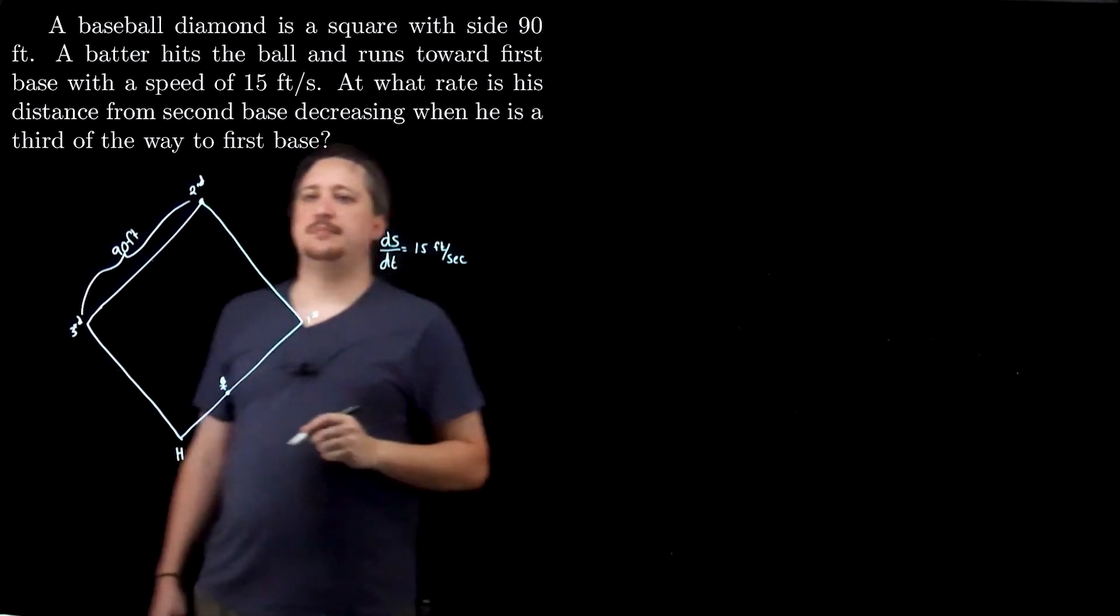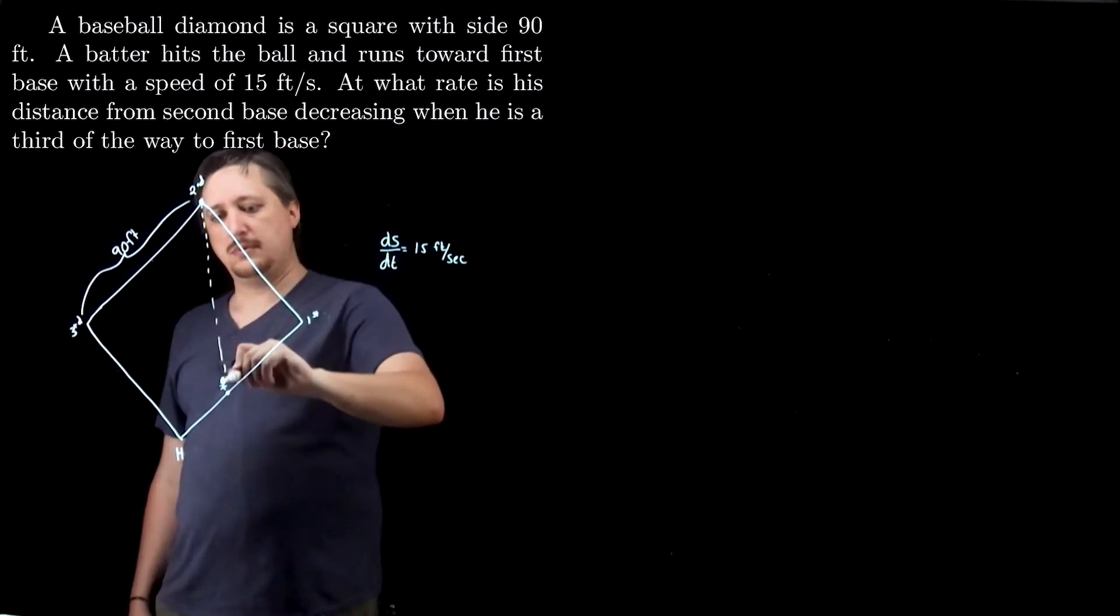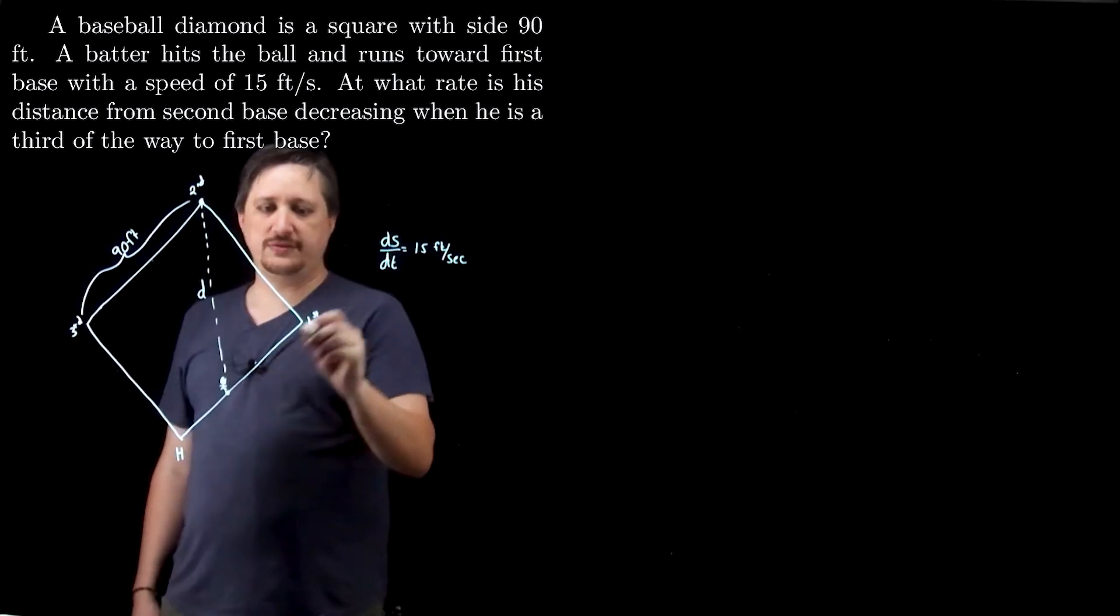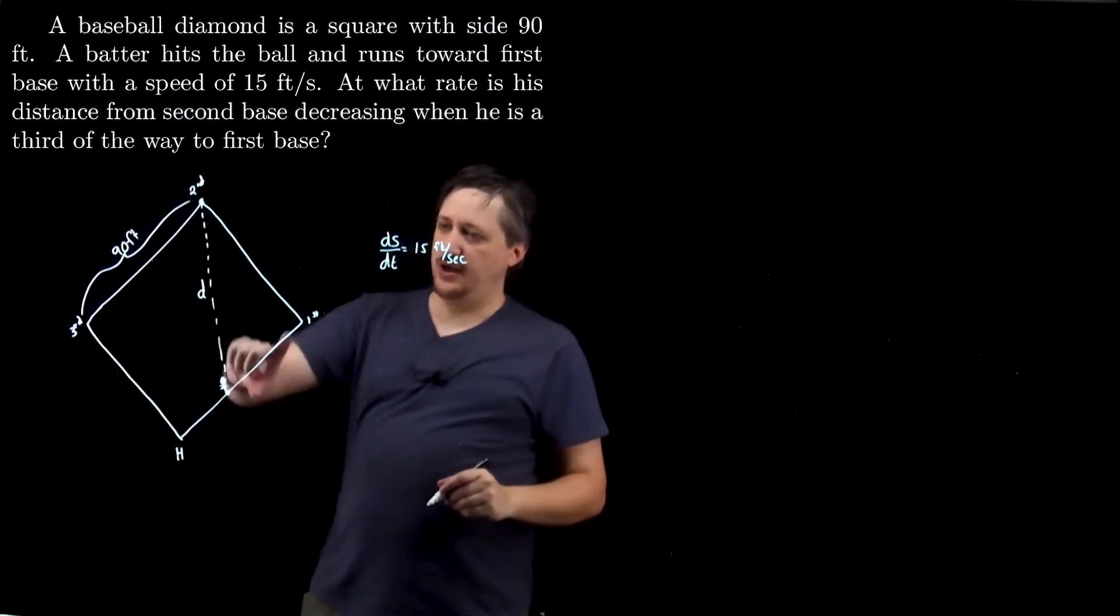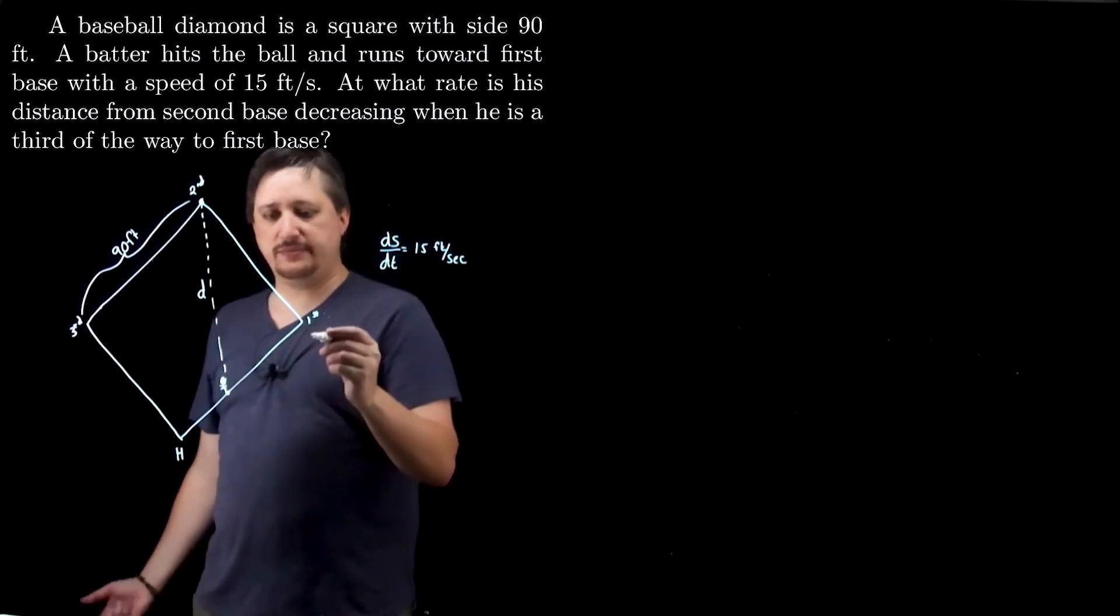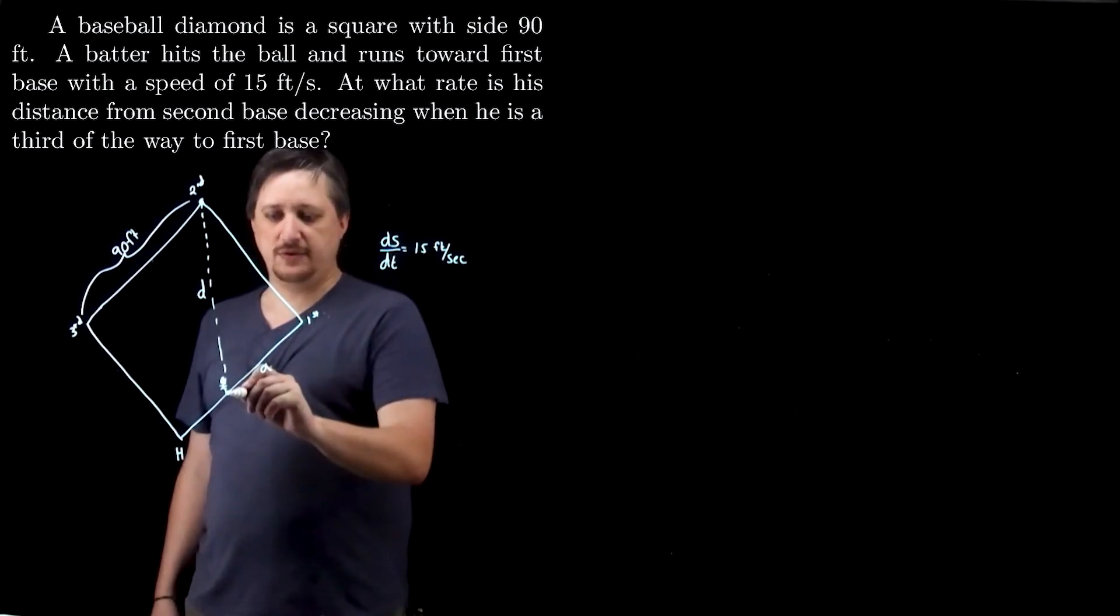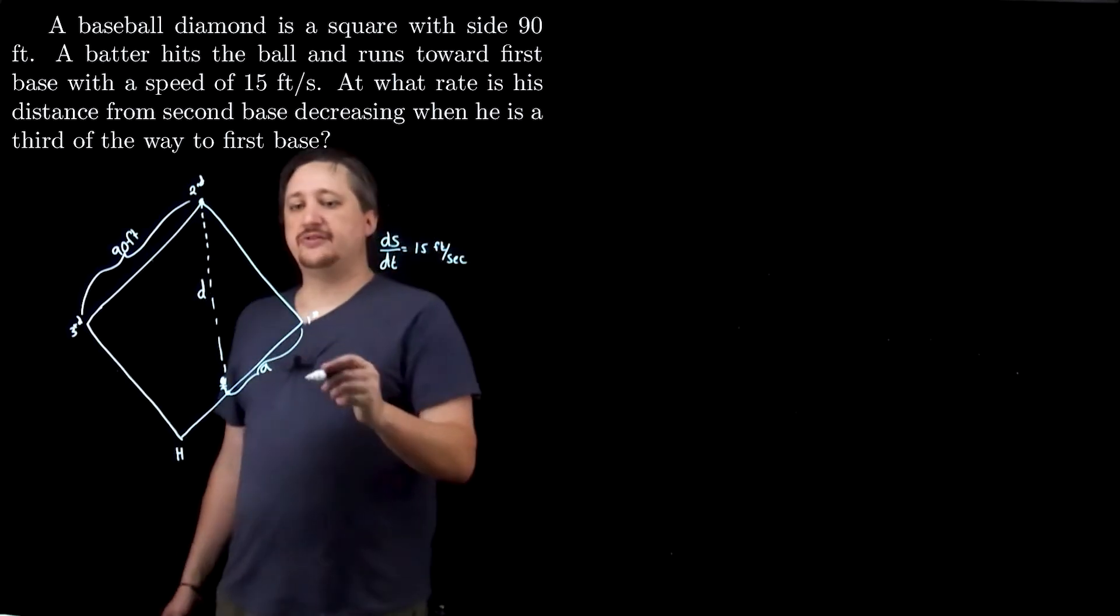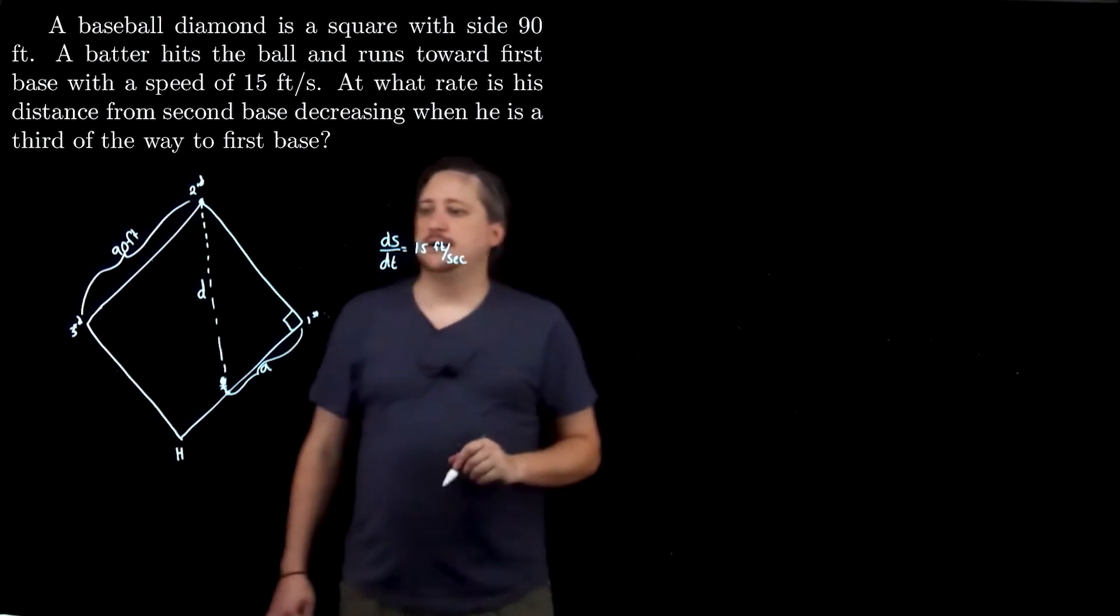And we want to know, I guess, the distance to second base, how that is changing. So let's call that distance d. And this distance is also changing. So looking at this, distance to second is changing as the person runs. The distance to first is also changing as the person runs. So maybe I'll call that a. So a is the remaining distance to first. And this thing is a square, so that's a nice right angle. And that might be helpful.